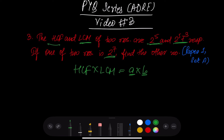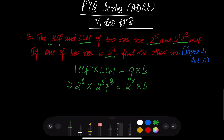We apply this theorem. HCF is 2 to the power 5, and LCM is 2 to the power 5 into 7 to the power 3. One of the numbers is 2 to the power 7. We need to find the other number.